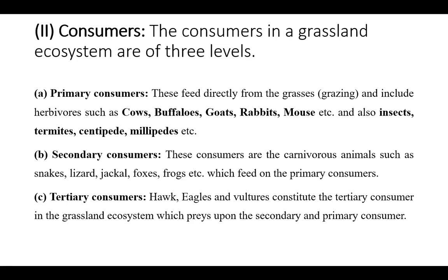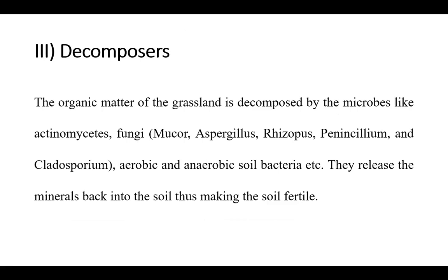Secondary consumers include snakes, lizards, jackals, foxes, and frogs. The tertiary consumers are those animals that eat secondary consumers, and include hawks, eagles, and vultures as tertiary consumers of the grassland ecosystem.